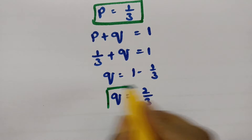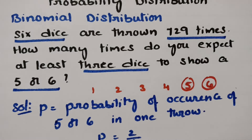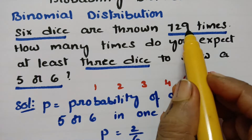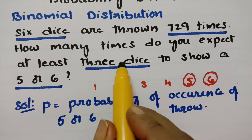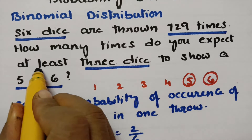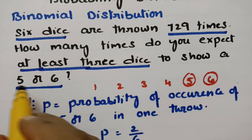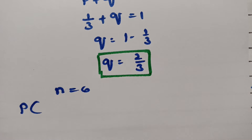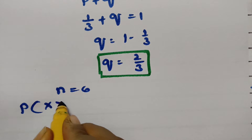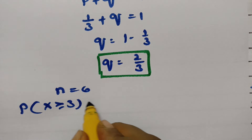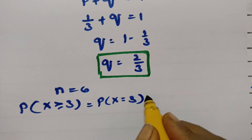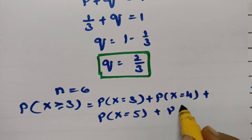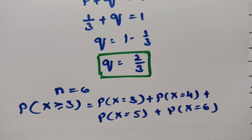We have P = 1/3 and Q = 2/3. Coming to the question: 6 dice are thrown, so n = 6. We need at least 3 dice to show 5 or 6. 'At least 3' means minimum 3 and maximum up to 6, so we expand: P(X=3) + P(X=4) + P(X=5) + P(X=6).